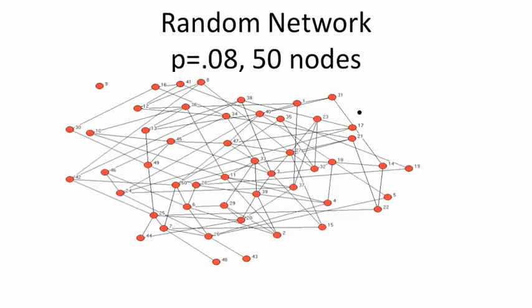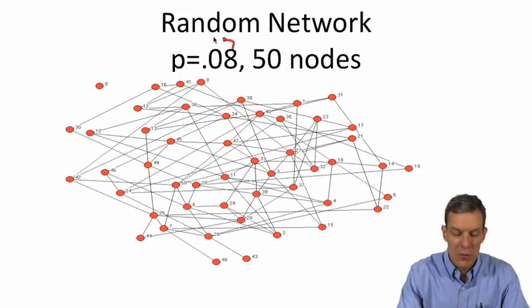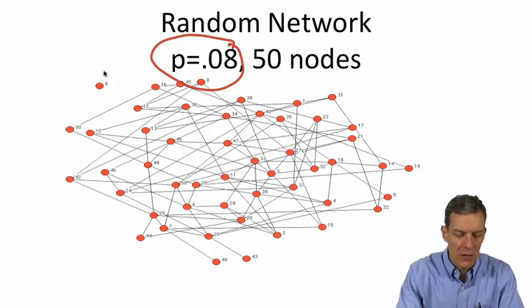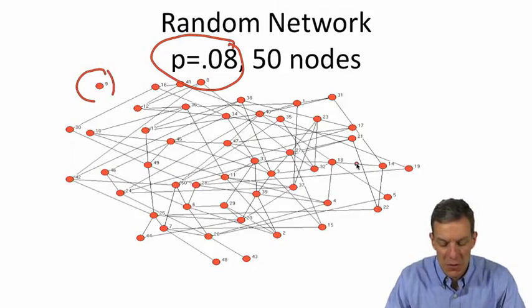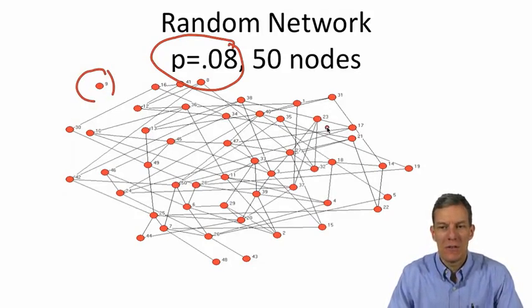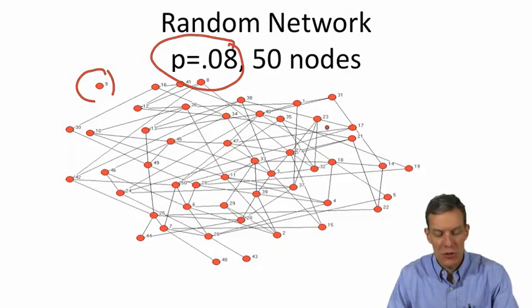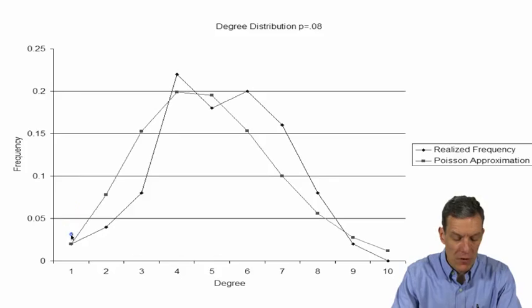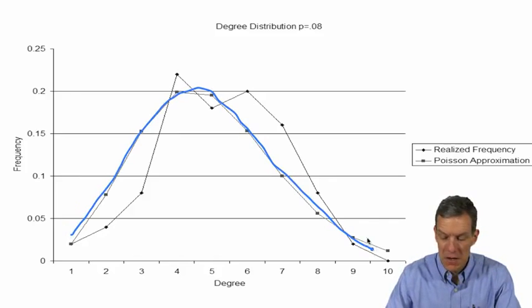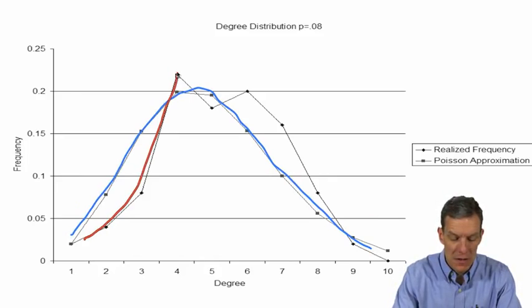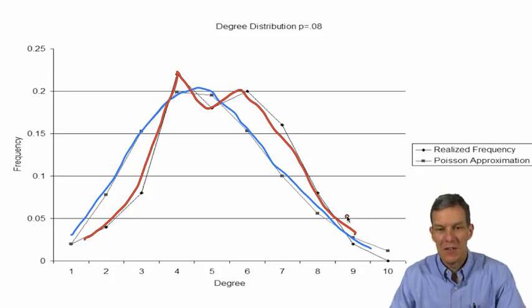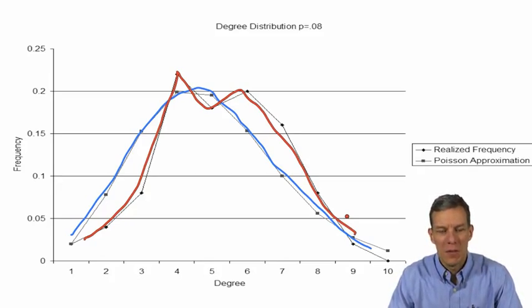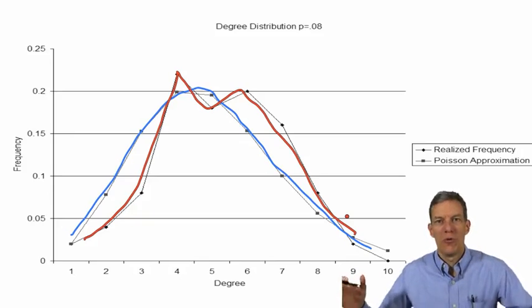If we instead bump this probability up to 0.08 on 50 nodes, then we get a much more connected graph. We still have one isolated node, and we end up with more nodes having many more connections. Now when we look at the Poisson approximation, we have a curve here, and the actual realized frequency ends up with something which is not exactly on target. The p is a little larger, so the approximation is not quite as great, but it's still fairly close.